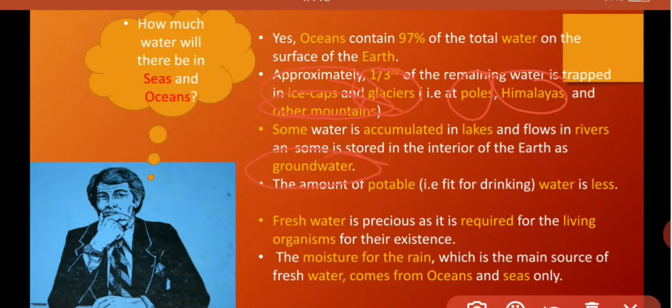The amount of potable water that is fit for drinking purpose is very less. Students, fresh water is very precious as it is required for living organisms for their sustenance on the earth. The moisture for the rain which is the main source of fresh water comes from oceans and seas only.